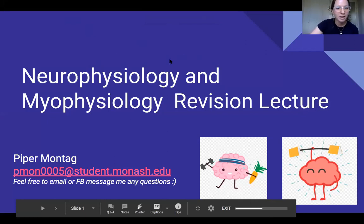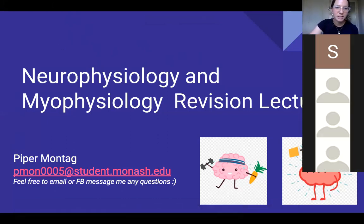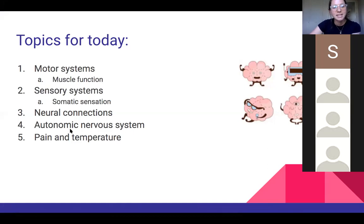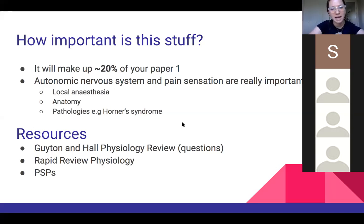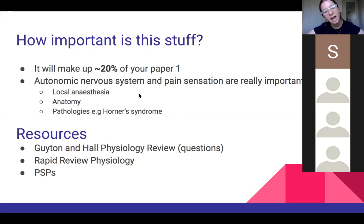Today we're going to be talking about neurophysiology and myophysiology. Here are my details if you want to get in contact and ask any questions. Hopefully you have access to these slides. We're going to be covering motor systems, sensory systems, neural connections, the ANS, and pain. This content made up 20% of our paper one last year, so it's quite important — and also clinically, it's really important to understand concepts like local anaesthetics, and a lot of pathologies involve the nervous system.